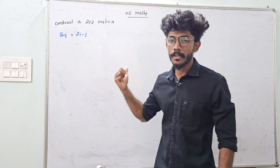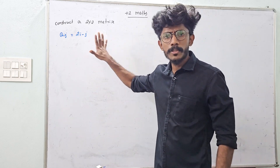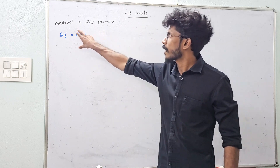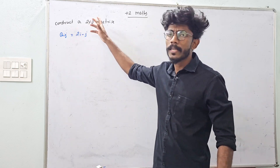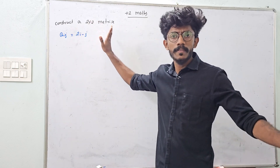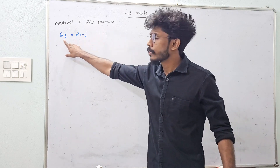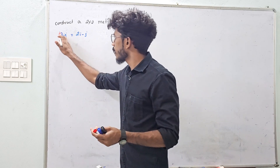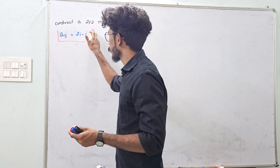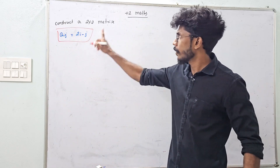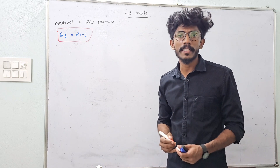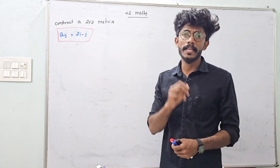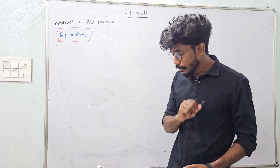Now, in this video, we have a question about a matrix. The matrix is constructed as 2x2, 3x3, or whatever. The matrix is called aij. Aij is equal to 2i minus j. The matrix is constructed as 2x2.